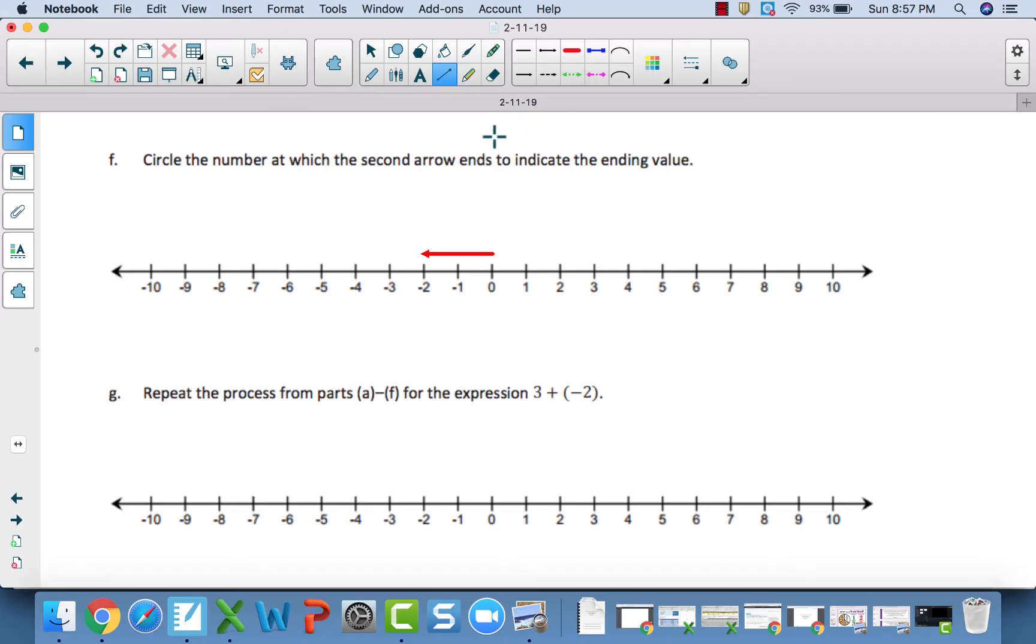Next step says, draw the second arrow three units to the right since you are counting up by negative two. And prior to that, it says I need to start the next arrow at the end of this arrow. So, I'm going from here, and I'm going three to the right: one, two, three. And, I'm stopping right here at one. Meaning, the answer to this equation, if I write it out, negative two plus three is going to equal one.